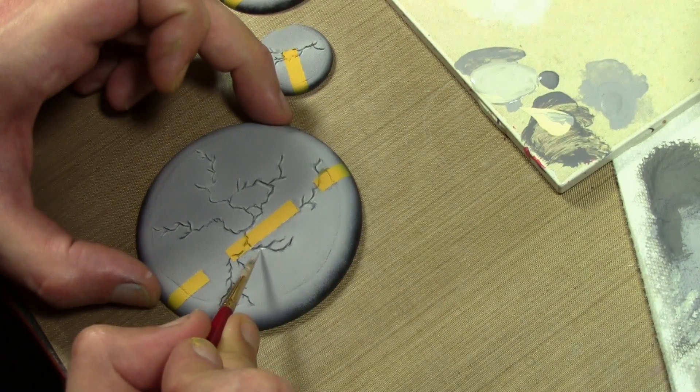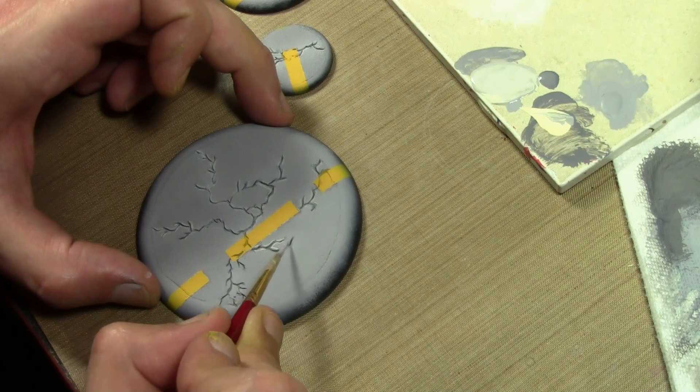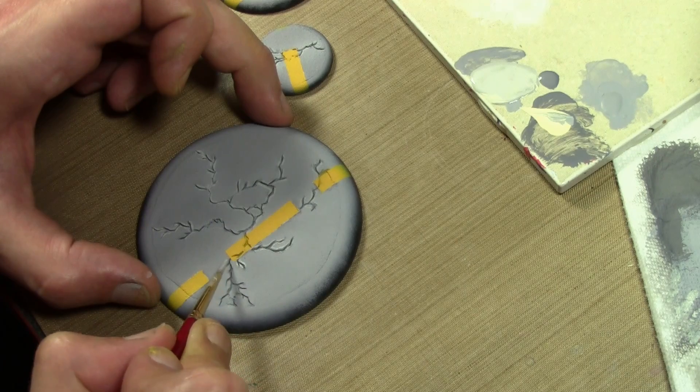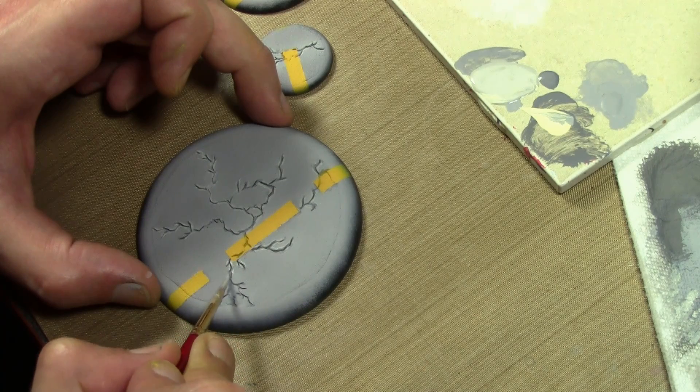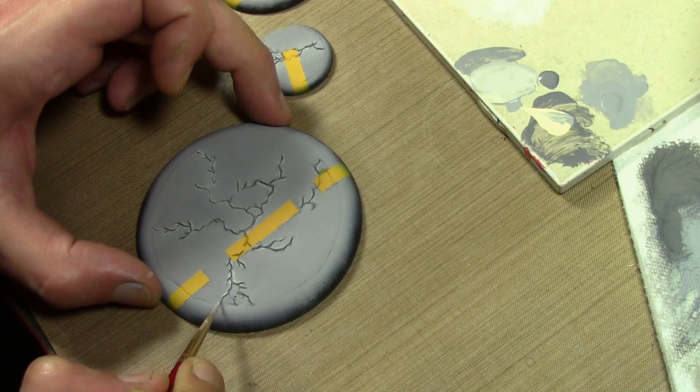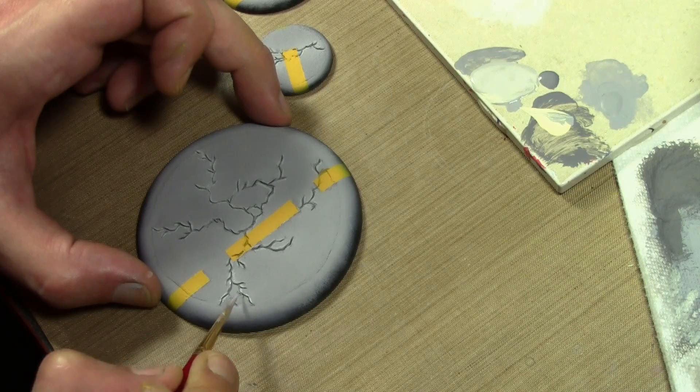However, the mistake I made here was that I should have waited and done the wash first. Because when I applied the wash, things got a little messy. And I had to go back and redo this to clean up the edging that got messed up by the wash. So, technique worked fine, but I did it in the wrong order. Do the wash first, then do this near to the end.